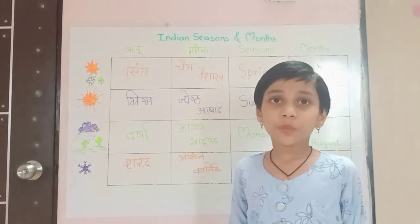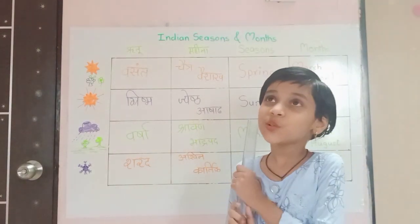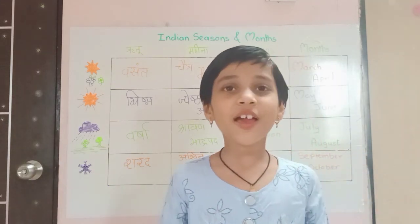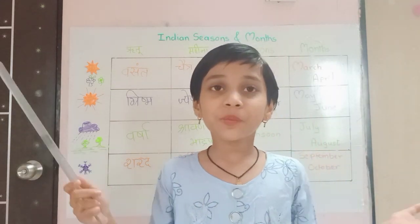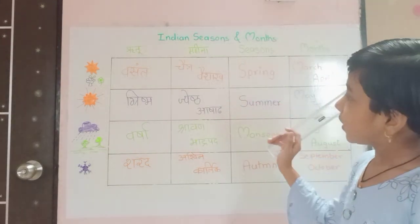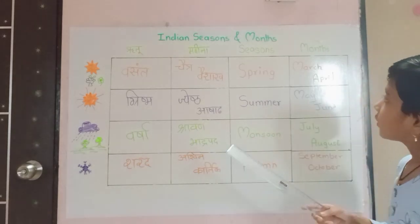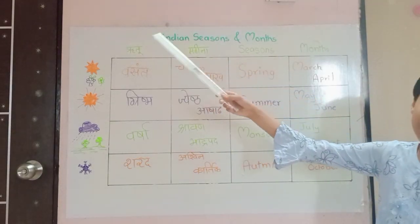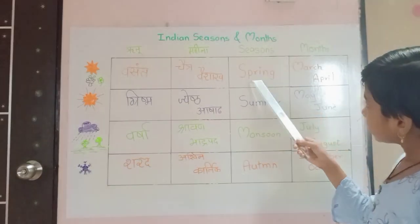First of all we will begin with Ritu Vasant. Flowers are blooming everywhere — two fragrant months. It falls in Mahina Chaitra and Veshakh. The English name for Ritu Vasant is Spring.